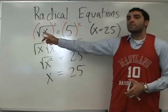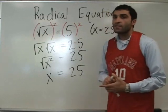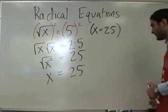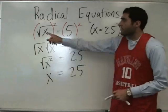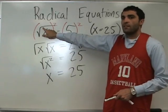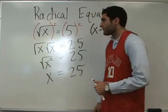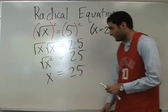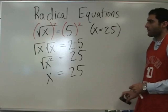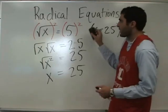So, to cancel the square root, what do you do to both sides? Square both sides. To cancel square roots from an equation, you square both sides. Good. That's going to happen for the rest of today — that's the main concept.